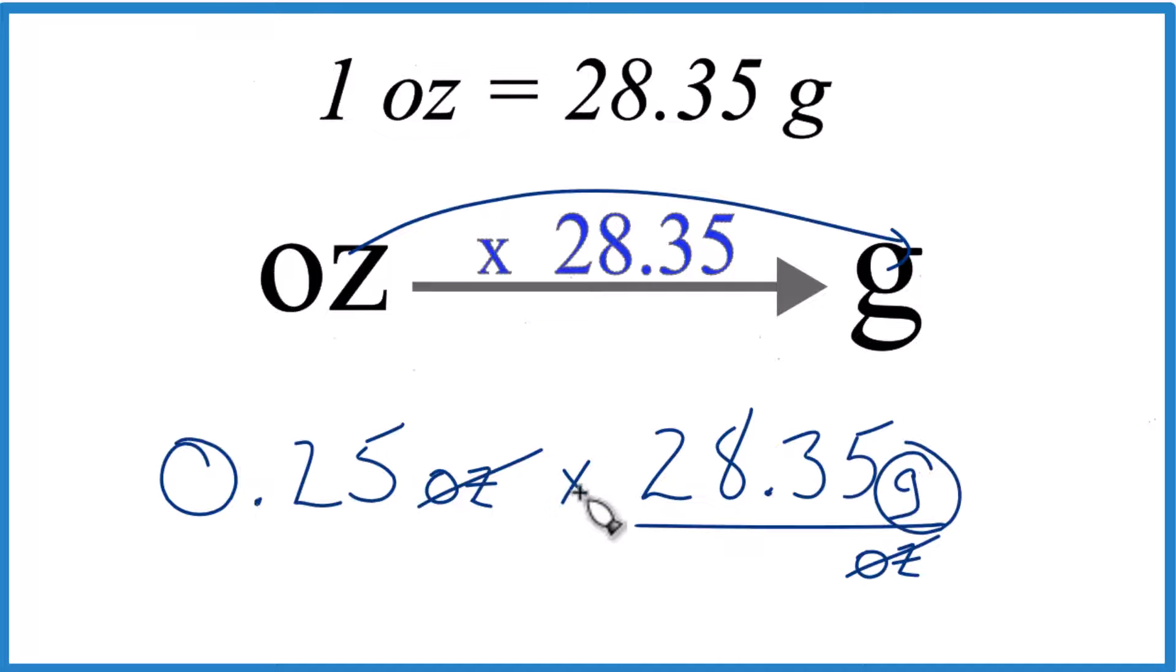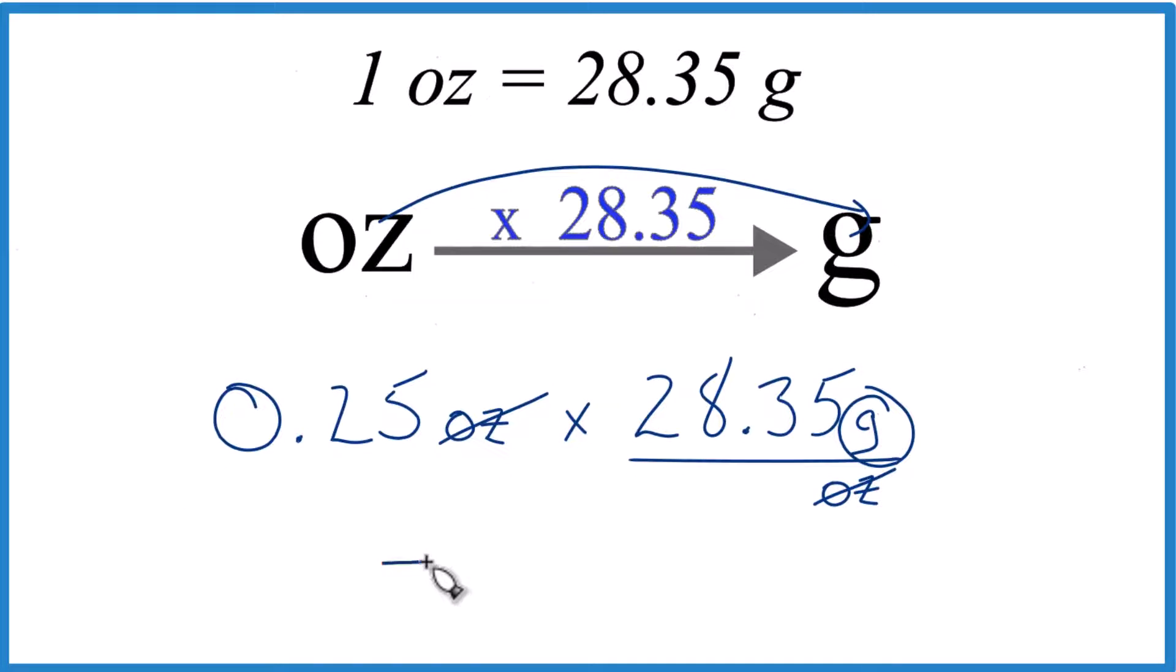So 0.25 times 28.35, we get 7.0875. And I'm going to call it 7.088, because I doubt your balance goes out much further than this.